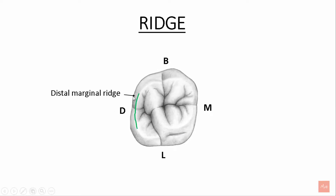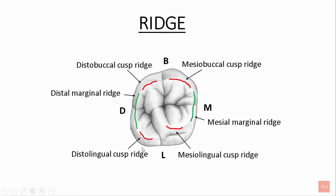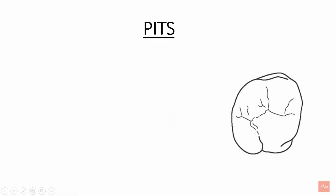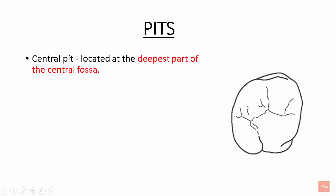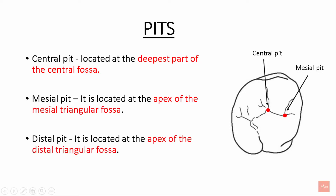The ridges include the distal marginal ridge, mesial marginal ridge, distobuccal cusp ridge, mesiobuccal cusp ridge, distolingual cusp ridge, mesiolingual cusp ridge, and the oblique ridge. There are three pits: the central pit located at the deepest part of the central fossa, the mesial pit at the apex of the mesial triangular fossa, and the distal pit at the apex of the distal triangular fossa.